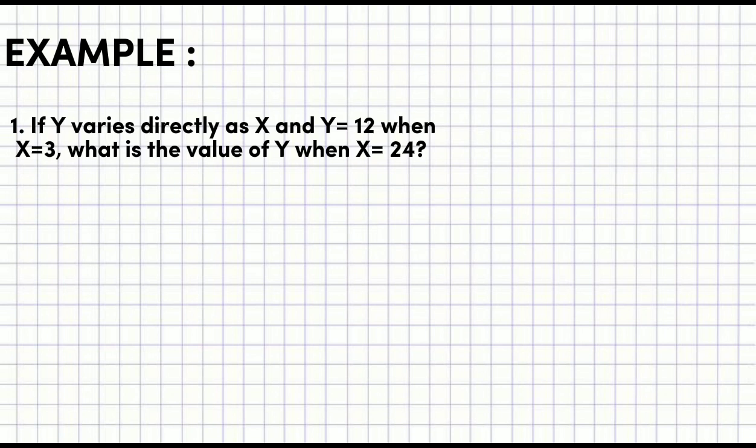So first, let's find the constant. We'll use the formula from earlier: y = kx. So it becomes 12 = k times 3. Let's solve it. 12 = k times 3, which equals 3k. Divide both sides by 3. The answer we get is 4. k = 4.